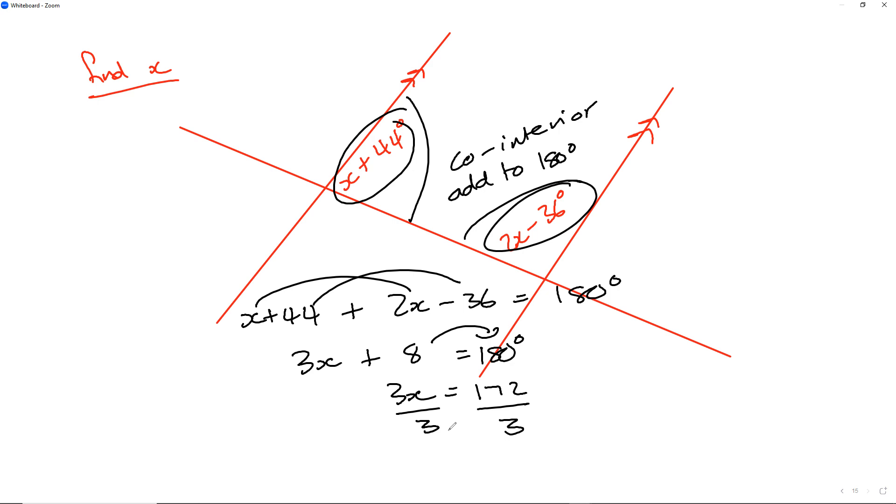I'm just going to grab a calculator. 172 divided by 3 comes to 57.3 degrees, so therefore x is equal to 57.3 degrees to three significant figures.